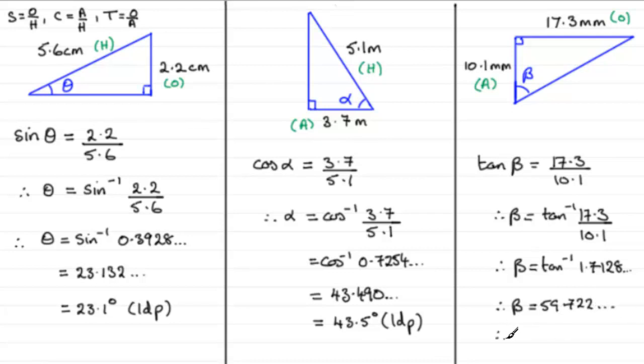Round that up to, say, one decimal place, and you've got beta equals 59.7 degrees to one decimal place, 1dp.